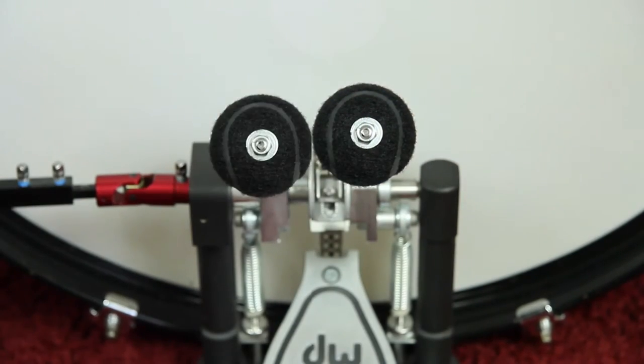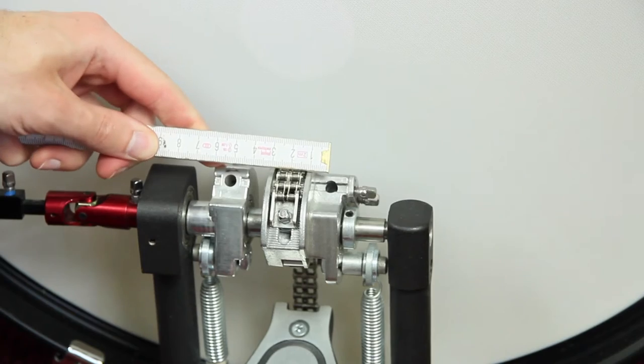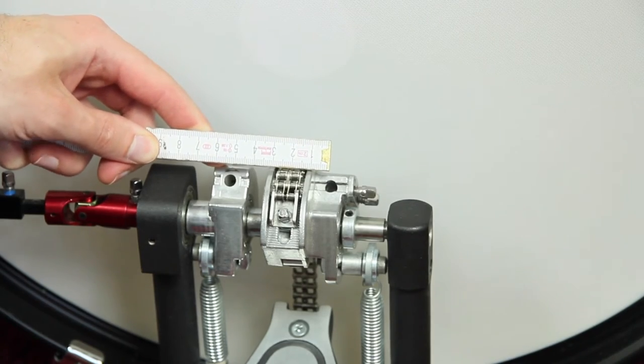Its diameter could be too big for some double pedals, like the DW-9000. In this case the beaters would touch each other. Make sure the beater rod distance of your pedal is bigger than 58mm if you want to use two of them.